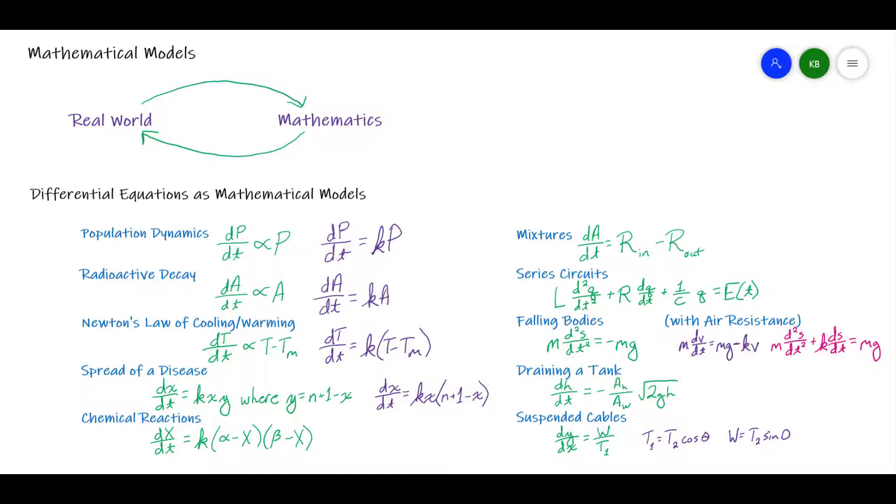Now, the thing that looks kind of like an alpha, what that's saying is it's saying that the change in the population with respect to time is an integer multiple of the population itself. So it's a constant multiple. We'll see that symbol a decent amount. Another way to write it is just to say the derivative of p with respect to t is equal to a constant, say k times p.